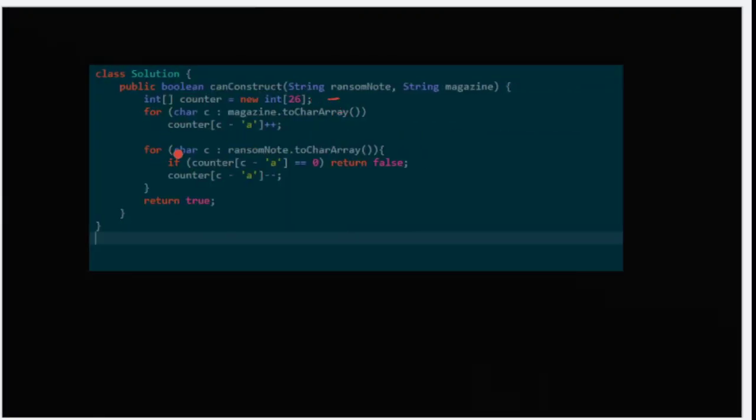Now let's look at the code. We take an array counter 26. We are running a loop specifically for magazine, storing its count. Later coming to the second part, you have to go to ransom note, check if it's zero, initial check with zero. If it's zero, return false, otherwise decrement it. And obviously if it's not false...